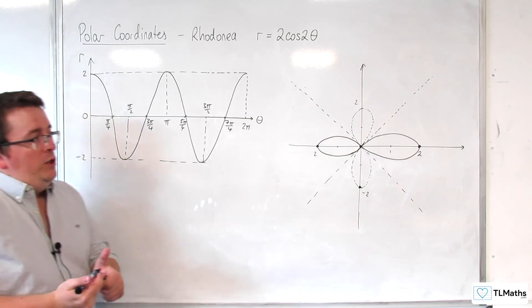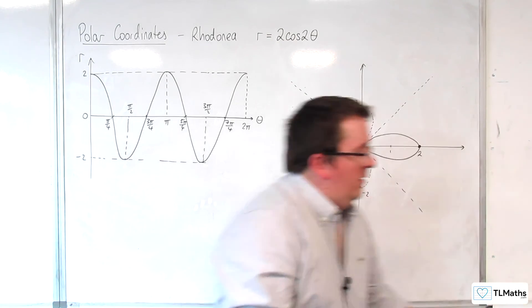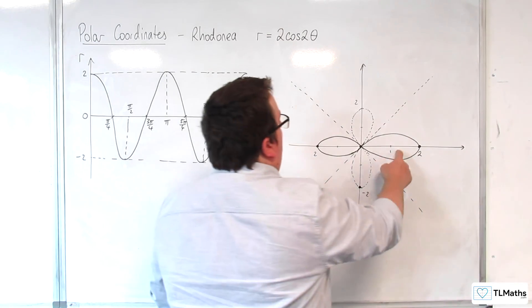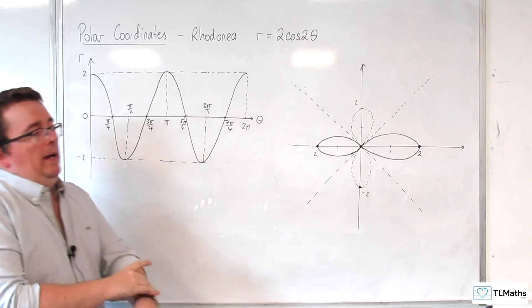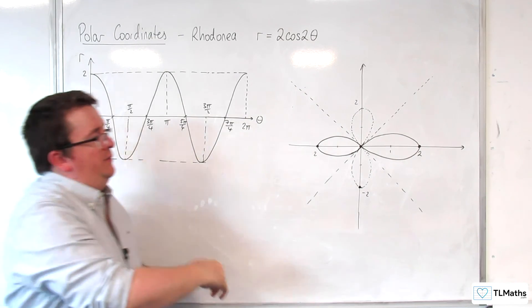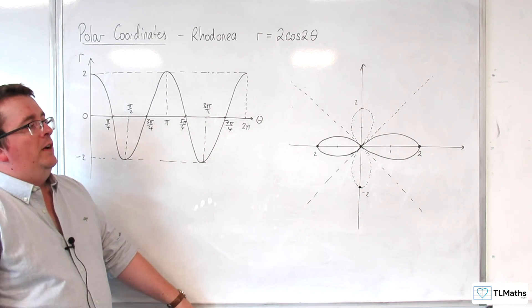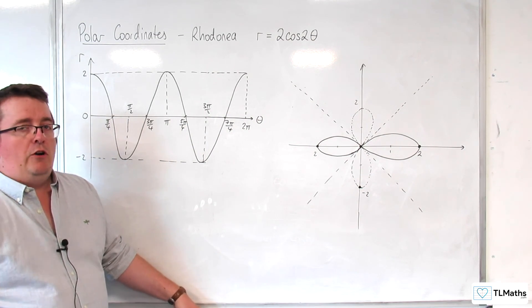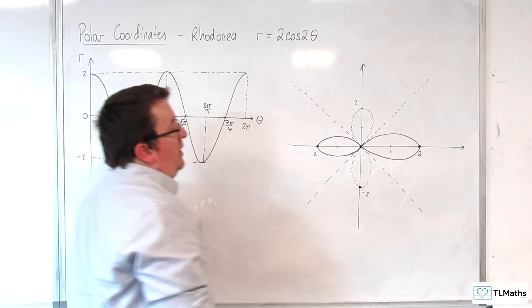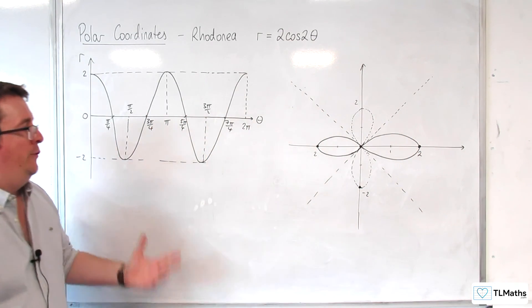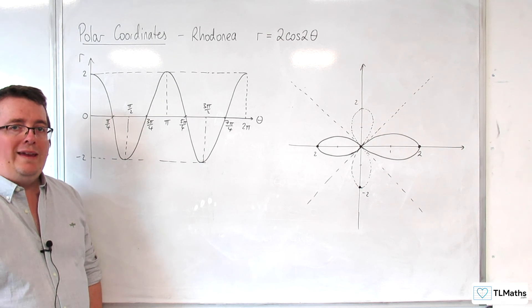And so, what you get are these rose petals. Each one of these is referred to as a petal. And the dash curve parts are where r is negative. So, if you're only plotting r greater or equal to 0, you would only have those two petals there. And that's why the curve looks the way that it does.